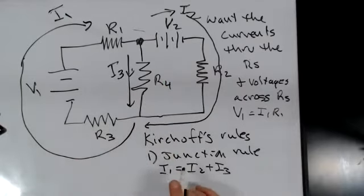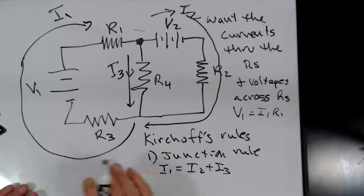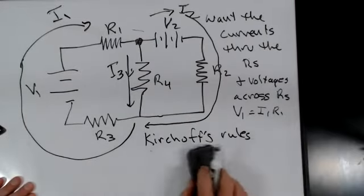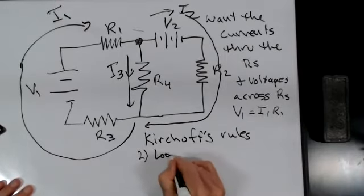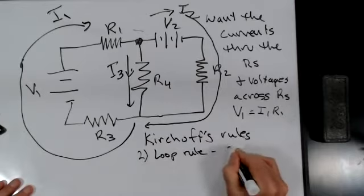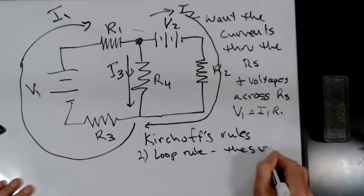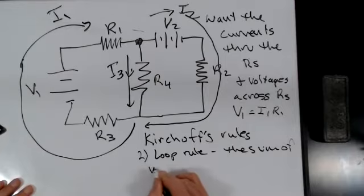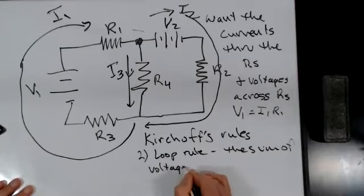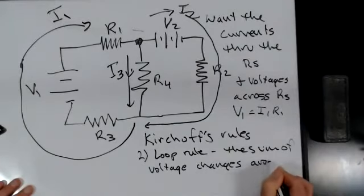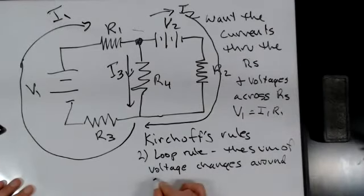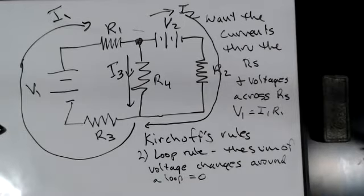The second rule is the loop rule. The sum of voltage changes around a loop equals zero.